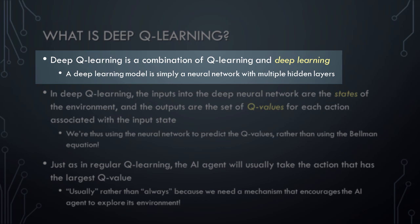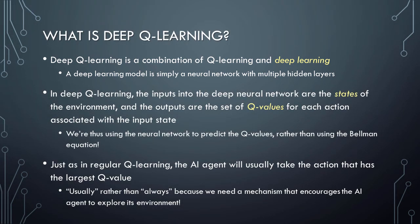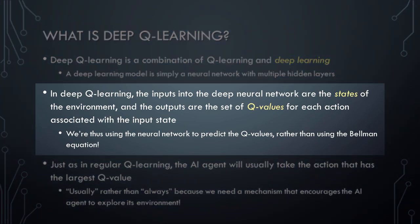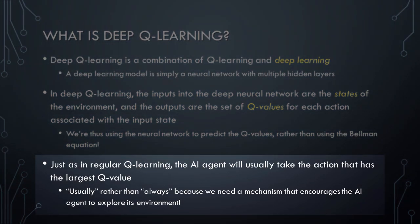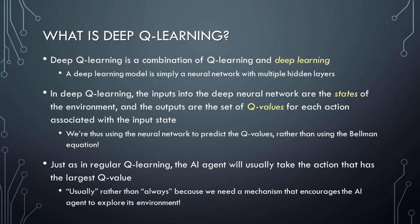Recalling what you learned earlier about reinforcement learning and Q learning in particular, in deep Q learning the inputs into the deep neural network are the states of the environment, and the outputs are the set of Q values for each action associated with the input state. We are thus using the neural network to predict the Q values rather than using the Bellman equation. Just as in regular Q learning, the AI agent will usually take the action with the largest Q value. We say usually rather than always because, just as with all reinforcement learning methods, we need a mechanism that encourages the AI agent to explore its environment.